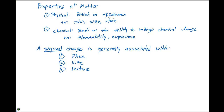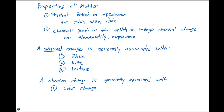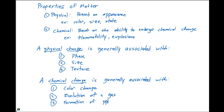A chemical change is generally associated with a color change, the evolution of a gas, or the formation of a precipitate. In each of these changes, a new substance is formed, and as a consequence these changes are irreversible. When we take a piece of paper and burn it, it's really hard to go back from the ashes resulting from that chemical change back to the piece of paper.